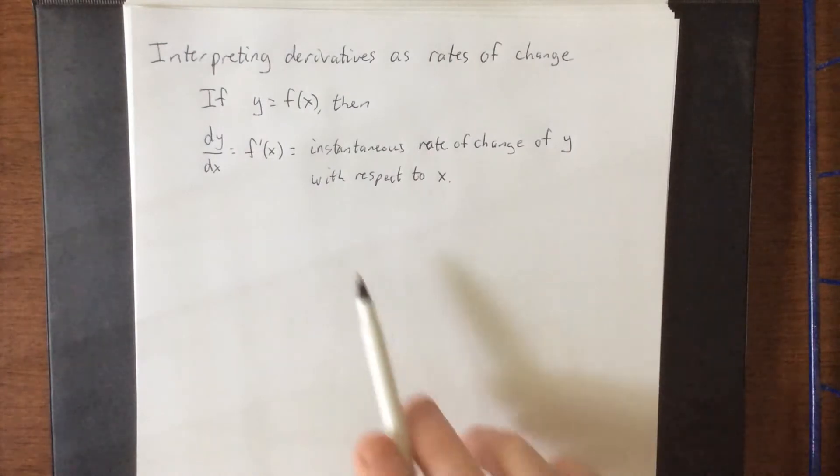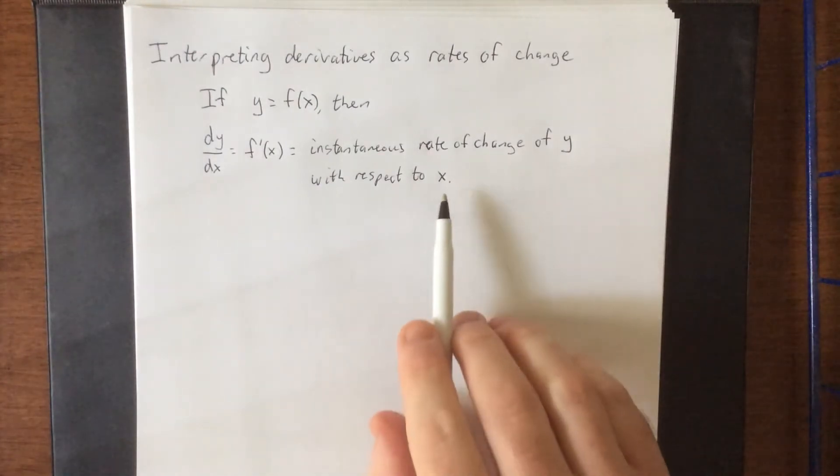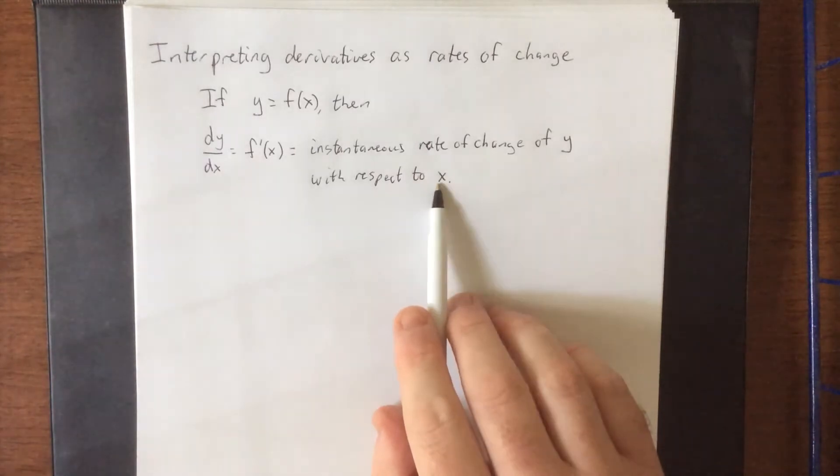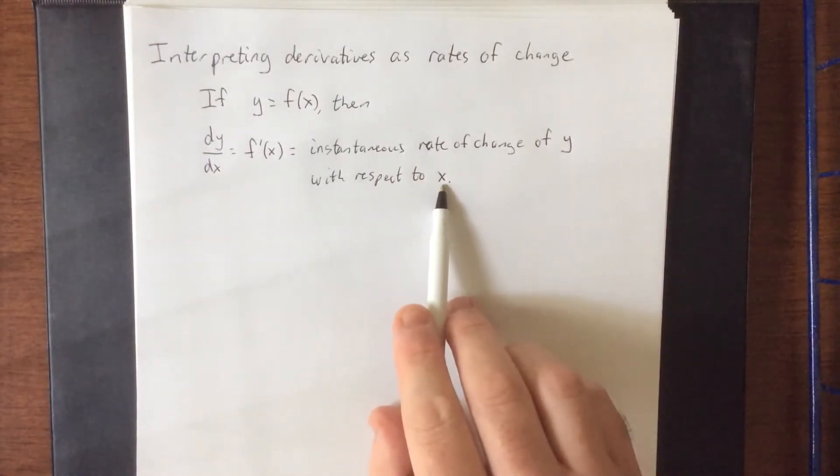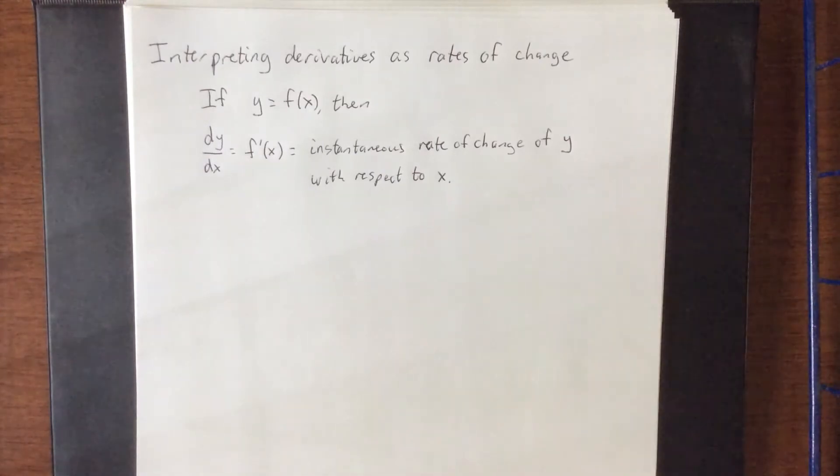This can be interpreted as the instantaneous rate of change of y with respect to x. I want to put a focus on those last couple words there. With respect to x means that as x is changing, this lets you know how y is going to be changing. For every unit change of x, how much is y going to be changing?